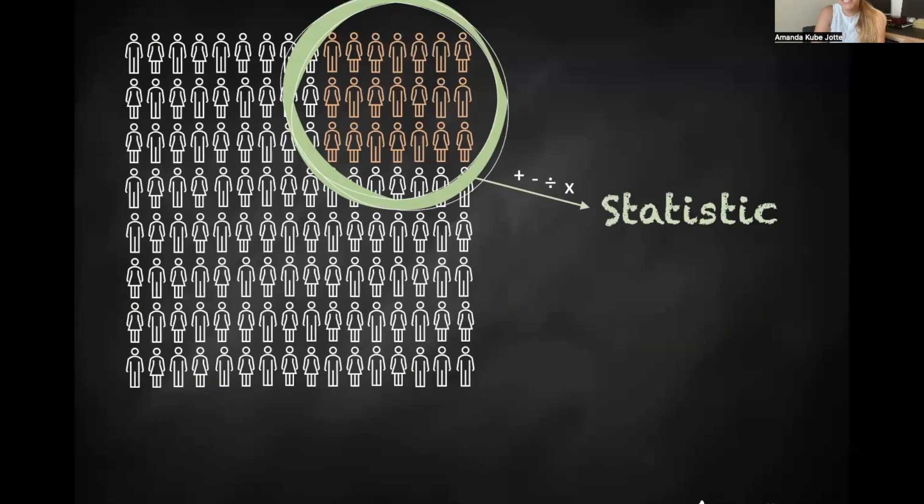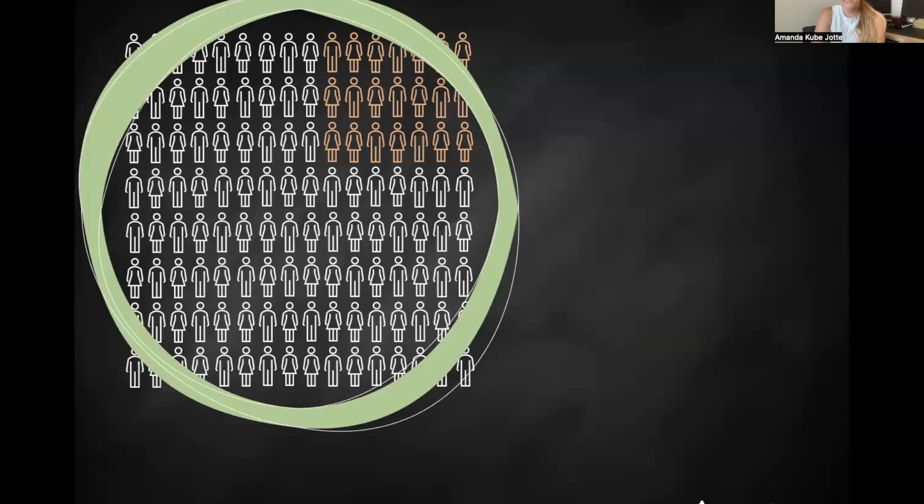So oftentimes, what you really want to know is not necessarily the statistic, but you want to know something about the broader population, right? You want to know what's going on in all of the U.S., but all you have is that sample. So the numerical characteristic of the population that you're interested in is called a parameter. So what we really want to know is the parameter. And what we have is a statistic.